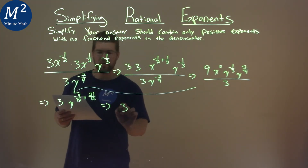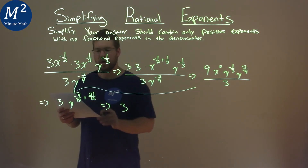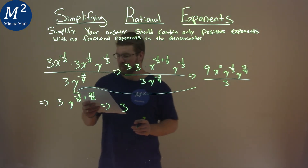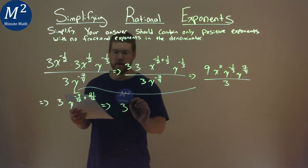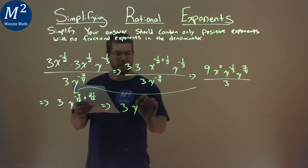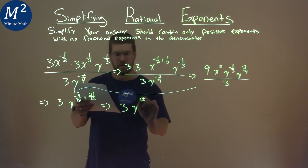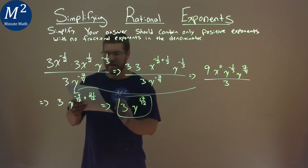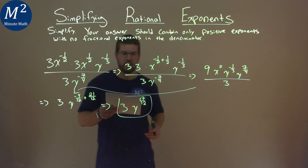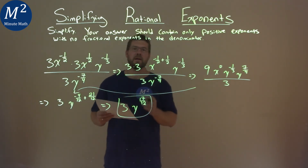Three stays right here, and we add them out. Negative four plus twenty-one is seventeen. So we have 3y to the seventeenth power over twelve, and that is our final answer.